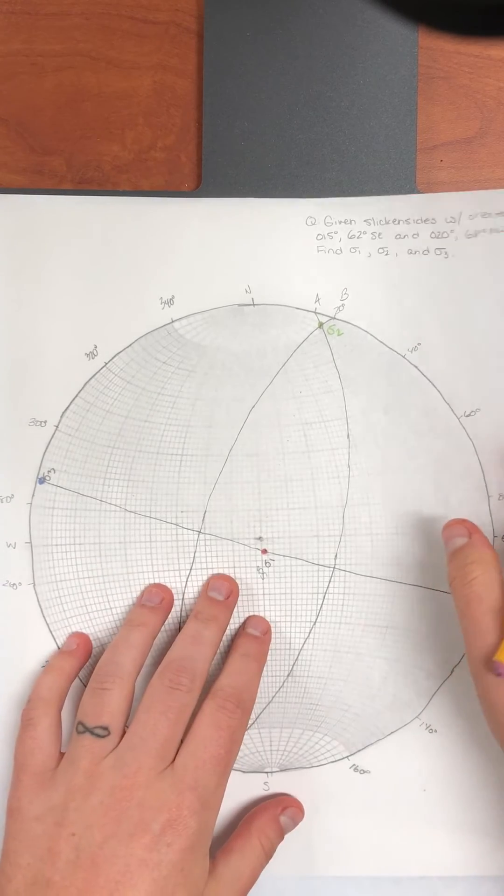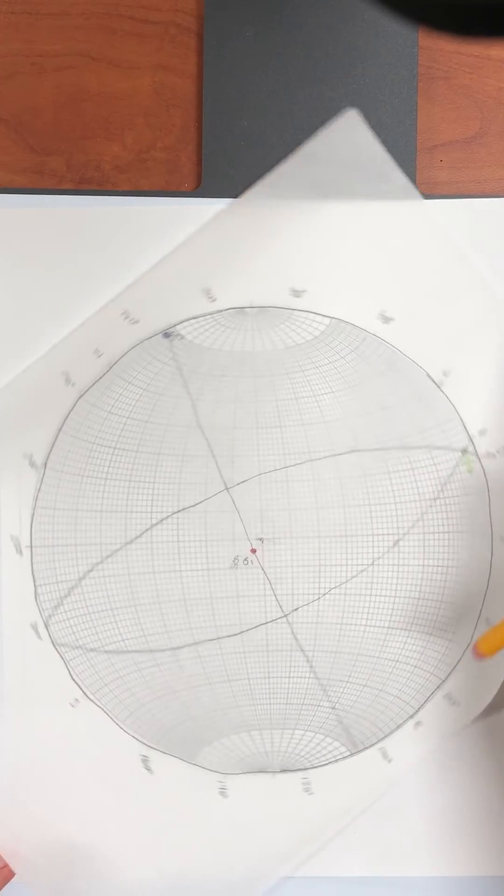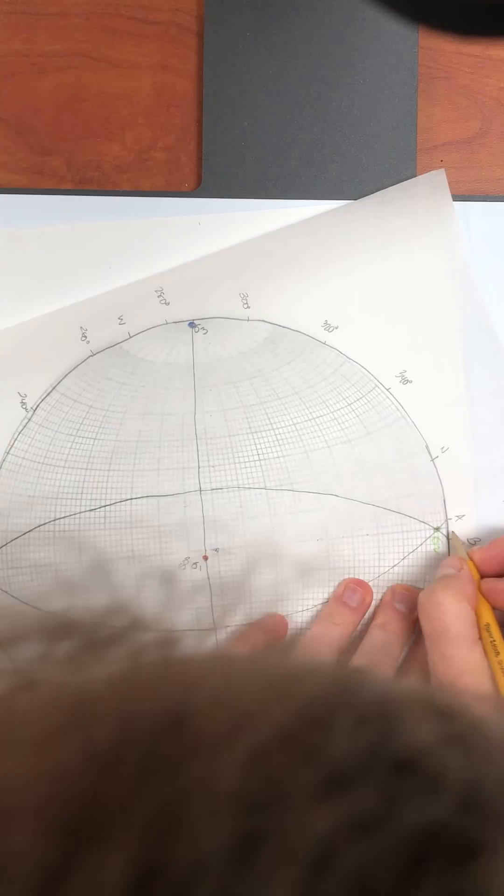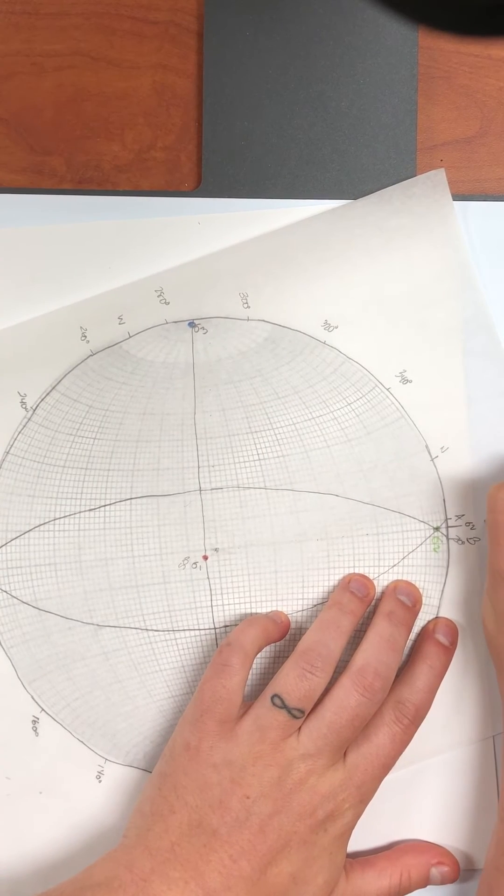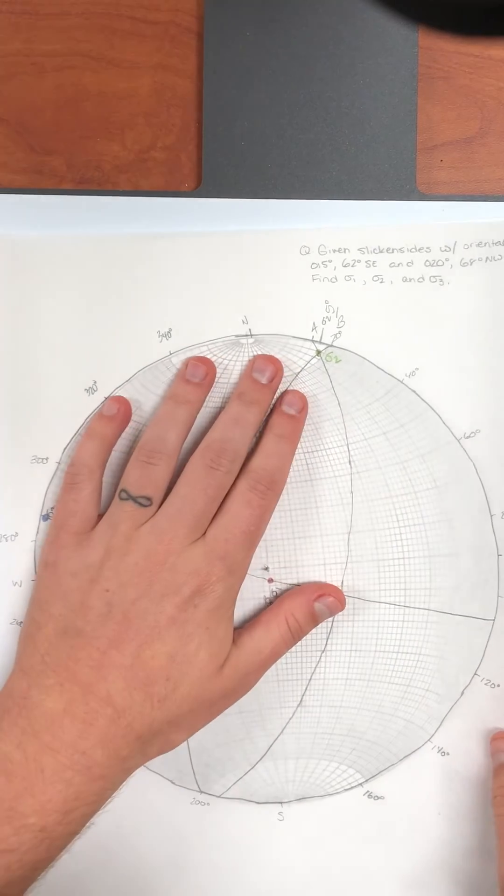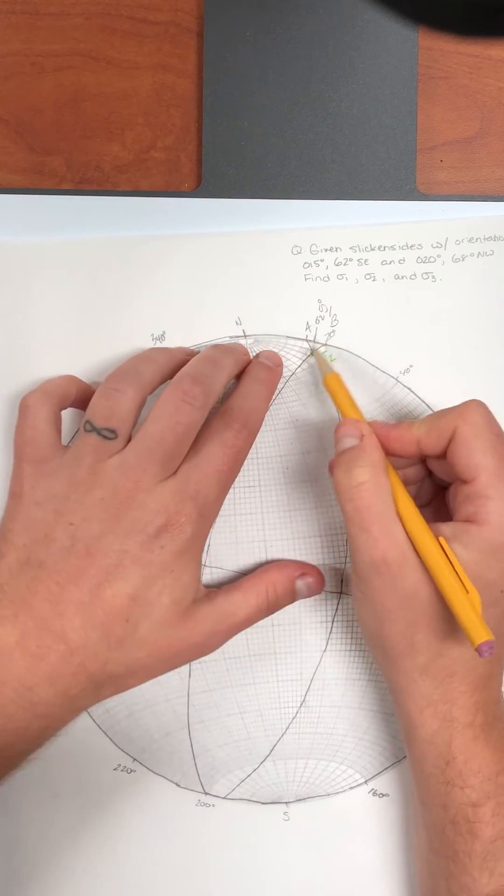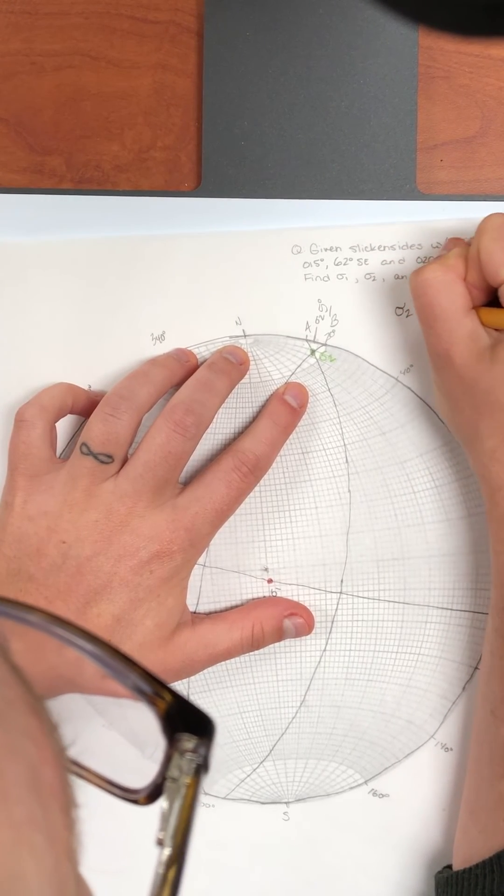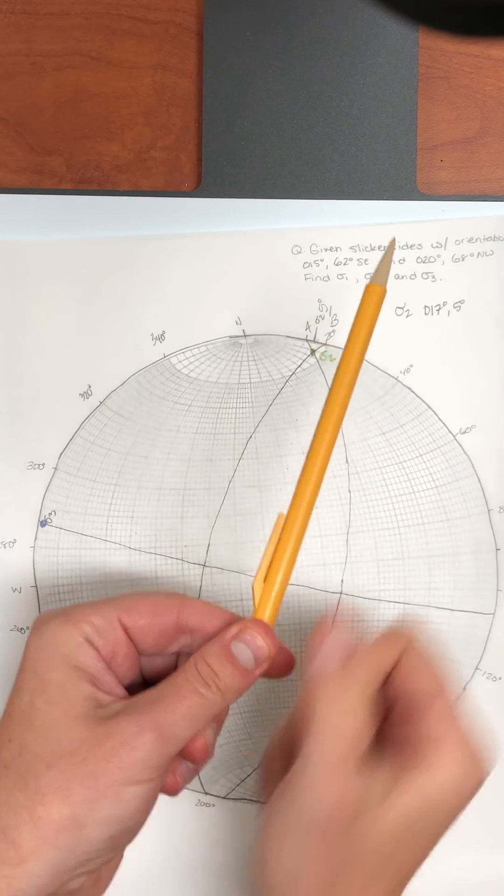So the first thing that we do when we want to identify the trend and plunge of a line is we rotate that. I'm going to start with sigma two. We rotate the point we're interested in down to the horizontal, and we put a tick mark. And I'm going to remind myself that that corresponds to sigma two. And then we count our way in, and we get about five. That means that five is the plunge. Now if I rotate north back to north, I can count over to where I drew sigma two, and that's the strike or the trend. So I've got 10, 12, 14, 16, about 17. So sigma two is at 017, five degrees, and it's plunging to the, if I take my pencil in the middle, barely tilt it, it's plunging to the north or northeast.